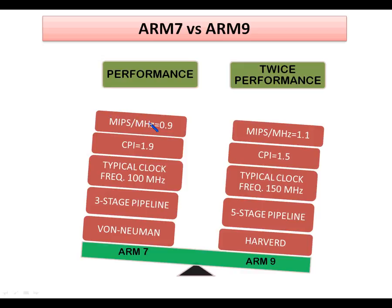In terms of MIPS per MHz, ARM7 achieves 0.9 MIPS/MHz, whereas ARM9 produces higher performance. ARM11 achieves even higher performance than the ARM7 family processor. All these advantages make ARM9 produce roughly twice the performance of the ARM7 family processor.